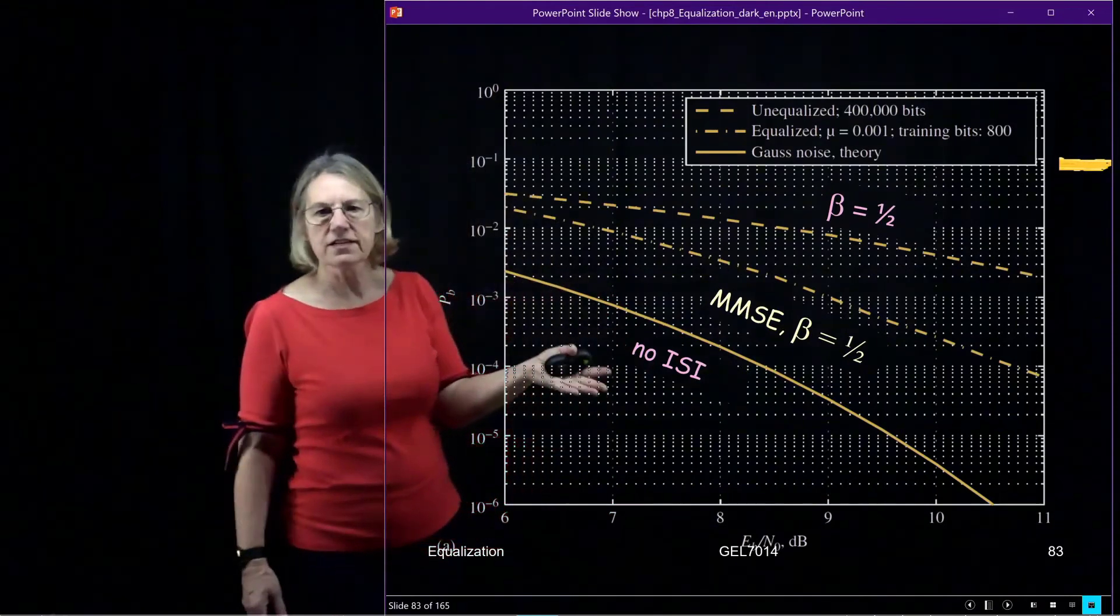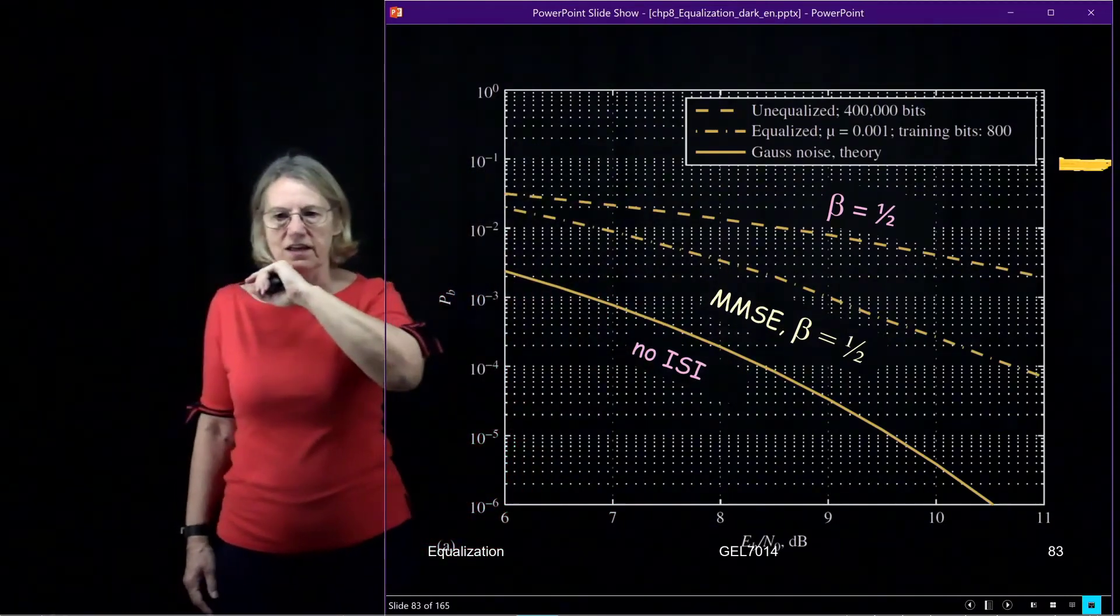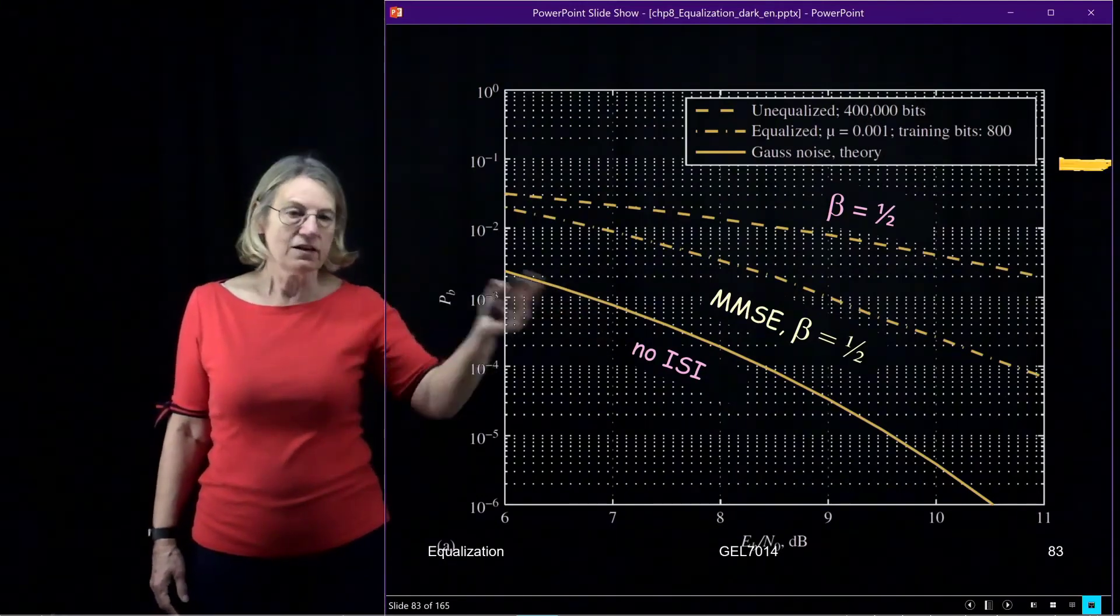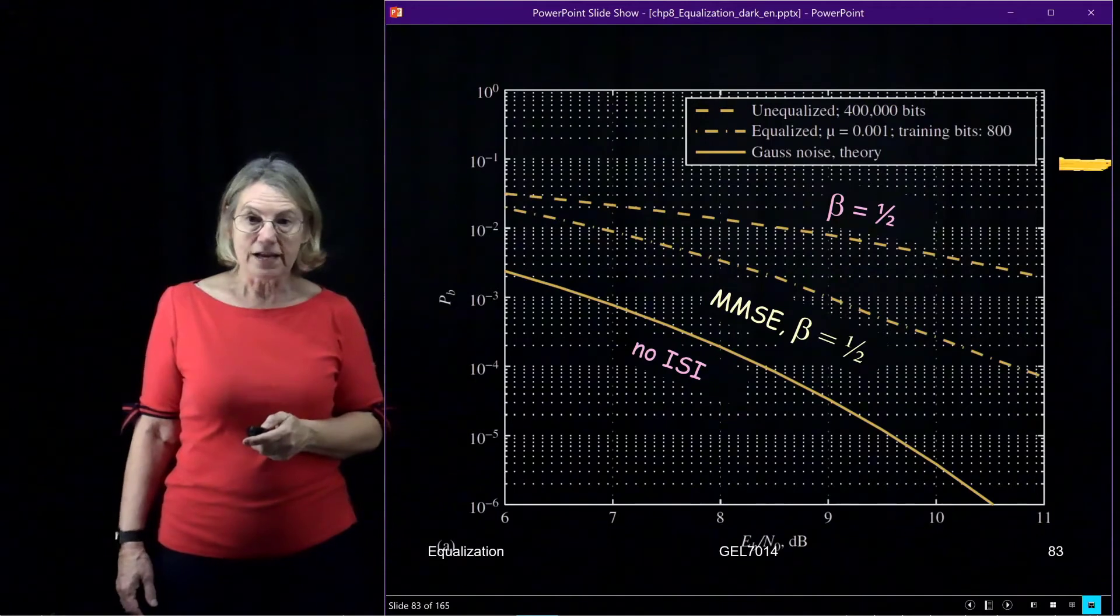Then I put in the MMSE and for this value we can see that the improvement that we're able to achieve. So this is an example where we can actually use the theoretical formulation to plot what would be the performance of this equalizer.